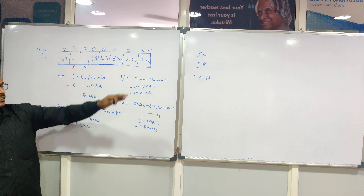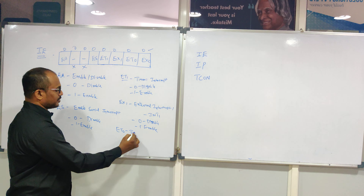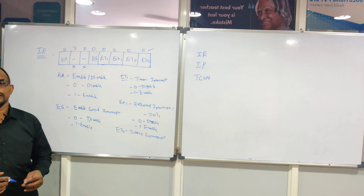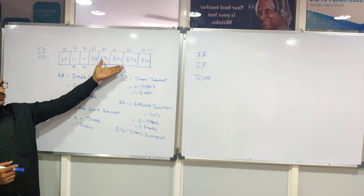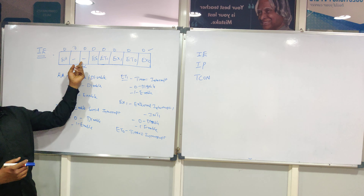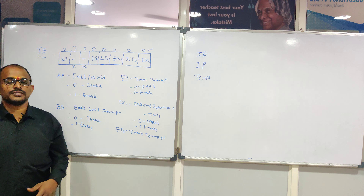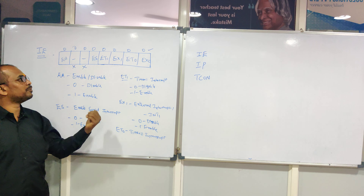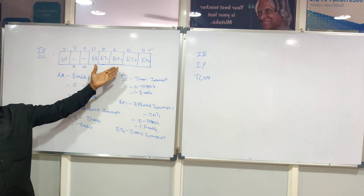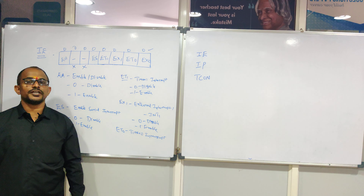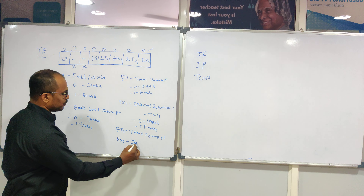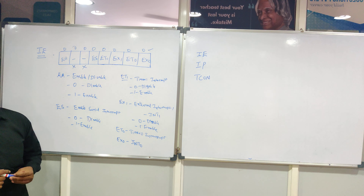The same applies to Timer 0 and external interrupt 0. ET0 is for Timer 0 interrupt, and EX0 is for external interrupt 0, which is INT0. To summarize the IE register: EA enables or disables all interrupts; ES controls the serial interrupt; ET1 and EX1 control Timer 1 and external interrupt 1; ET0 and EX0 control Timer 0 and external interrupt 0. Logic 1 enables and logic 0 disables.